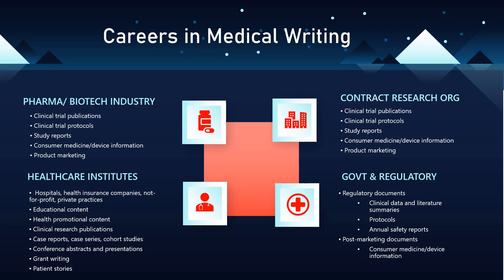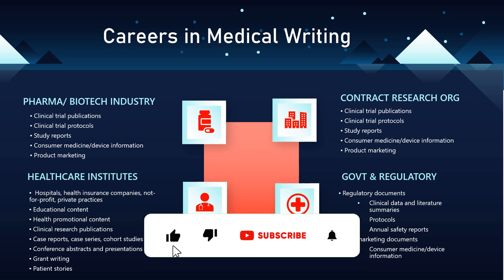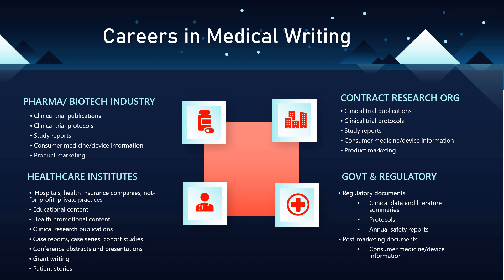When it comes to career options in medical writing, there are four major areas where you can work. First is the pharma or biotech industry; second is contract research organizations (CROs); third is healthcare institutes; and fourth is government or regulatory agencies. In the pharma and biotech industry, they conduct a lot of clinical trials, so clinical trial publications, protocols, study reports, consumer and medicine device information writing, and product marketing content are generated — and medical writers are involved in all of these.